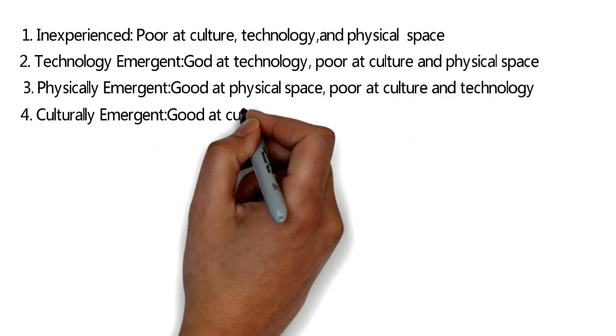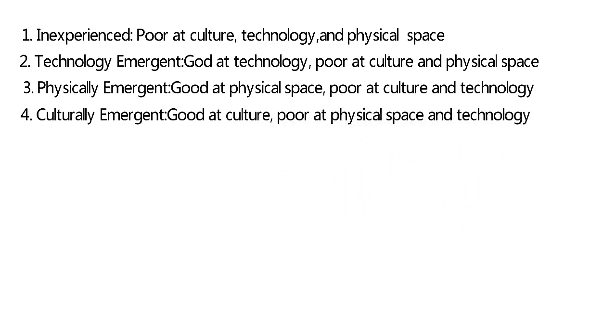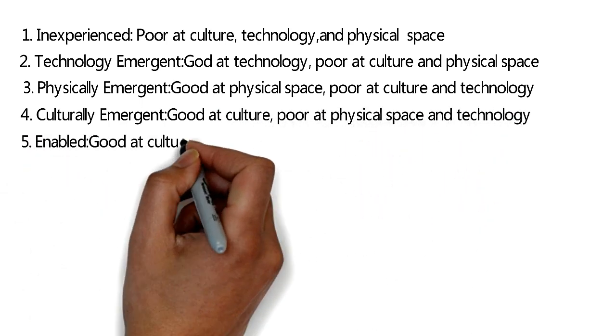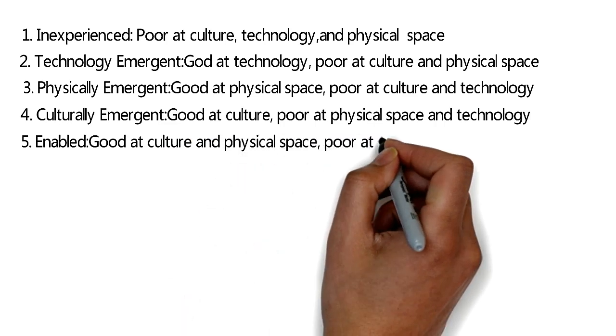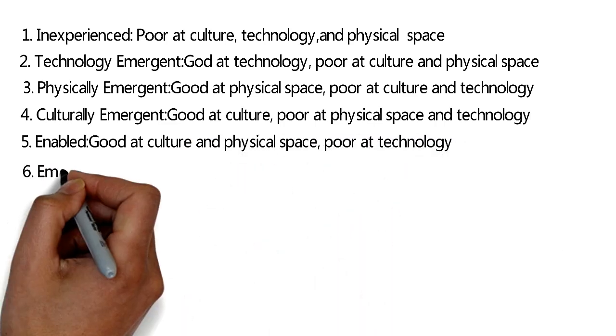5: Enabled—good at culture and physical space, poor at technology. 6: Empowered—good at culture and technology, poor at physical space.